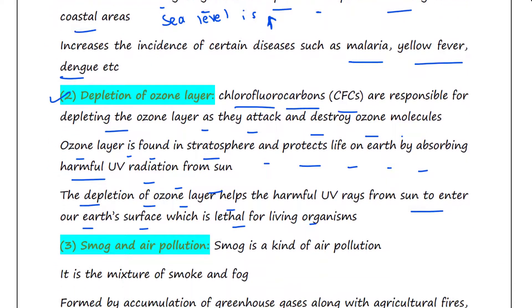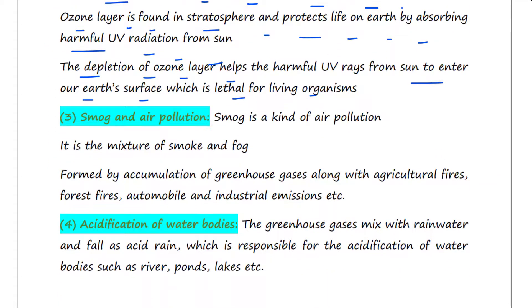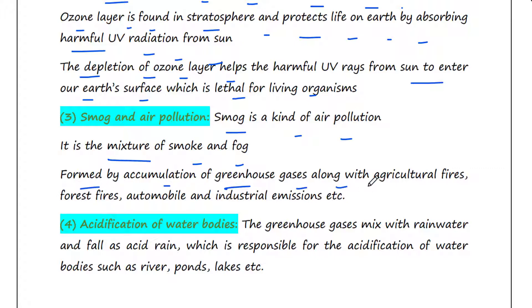The next effect is smog and air pollution. Smog is a kind of air pollution — it is a mixture of smoke and fog. Smog is generally formed by the accumulation of greenhouse gases along with agricultural fires, forest fires, automobile and industrial emissions.